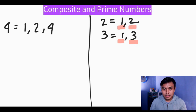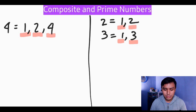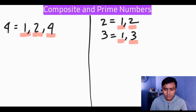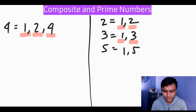Based on the definition, composite numbers have more than two factors, so four is a composite number. Next is number five — five has exactly two factors, one and five, so we put it in the prime numbers column and underline the factors.